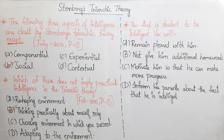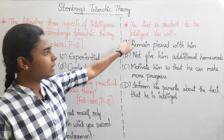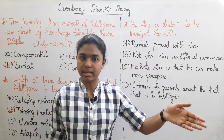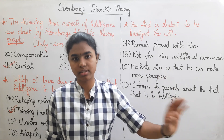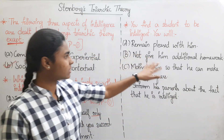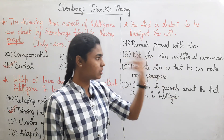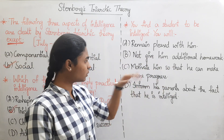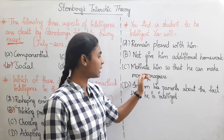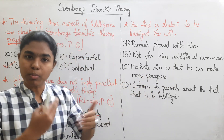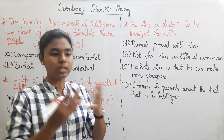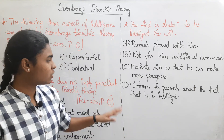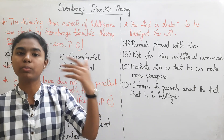Next question: You find a student in a classroom to be intelligent. What do you want to do? Option: Remain pleased with him. Option: Not give him additional homework. Option: Motivate him so that he can make more progress — academic progress, develop him. You should motivate him so that he can make more progress.